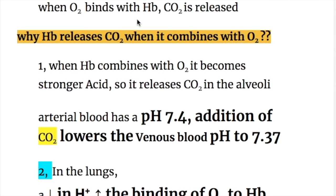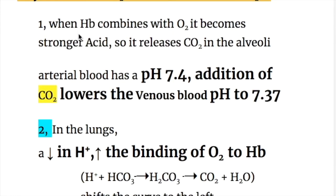What happens in the lungs? When oxygen binds with hemoglobin, carbon dioxide is released. Why does hemoglobin release carbon dioxide when it combines with oxygen in the lungs? When hemoglobin combines with oxygen, it becomes a stronger acid, so it releases carbon dioxide in the alveoli.